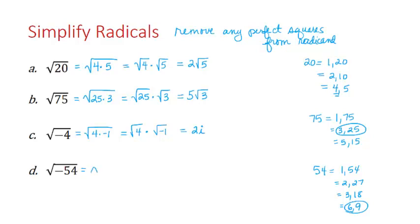So we will rewrite this as negative 9 times 6, which is the square root of negative 9 times the square root of 6. The square root of 9 is 3, the square root of negative 1 is i, and the square root of 6 we can't simplify any further.